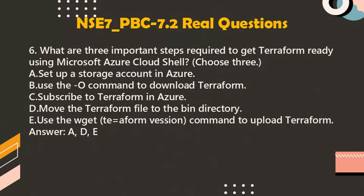Question 6: What are three important steps required to get Terraform ready using Microsoft Azure Cloud Shell? Choose three. A. Set up a storage account in Azure. B. Use the curl command to download Terraform. C. Subscribe to Terraform in Azure. D. Move the Terraform file to the bin directory. E. Use the wget command with the Terraform version specified to upload Terraform. Answer: A, D, E.